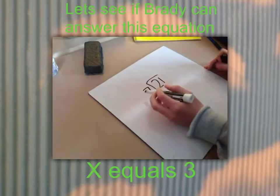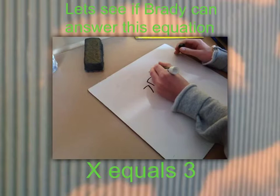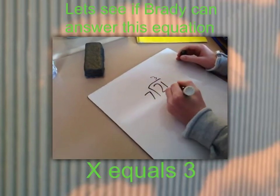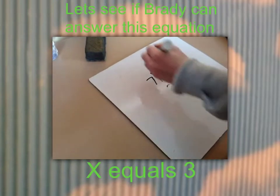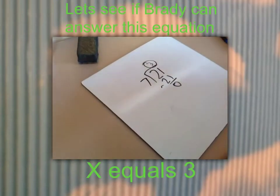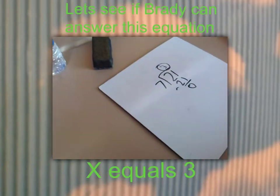Now, he is finding out what times 7 equals 21. It's 3. 3 equals x.